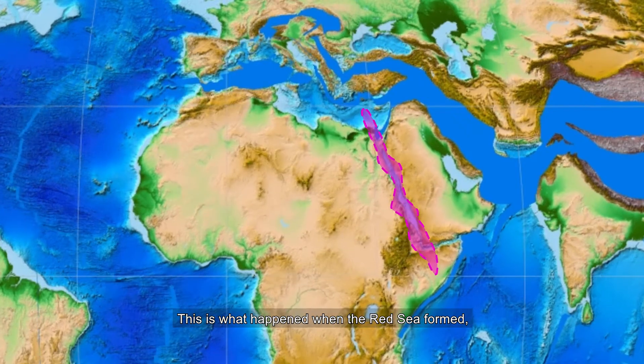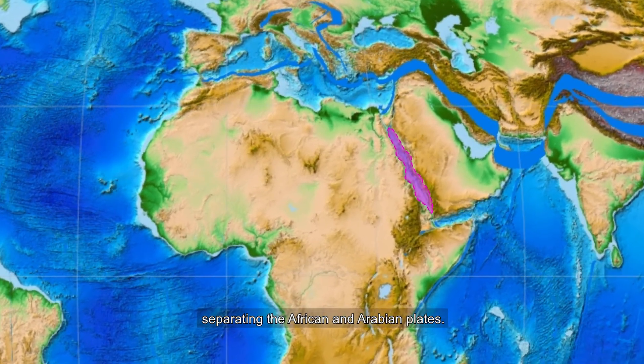This is what happened when the Red Sea formed, separating the African and Arabian plates.